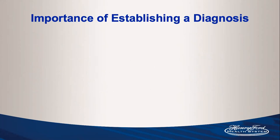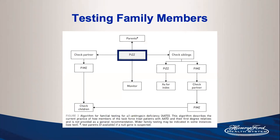Establishing a diagnosis is important for several reasons. First, family members need testing — if a patient has PI*ZZ genotype, siblings may also have the disease or be carriers. Checking the partner is important: if they have normal MM genotype there's essentially no risk to offspring. If the partner is a carrier or has disease, children should certainly be tested.